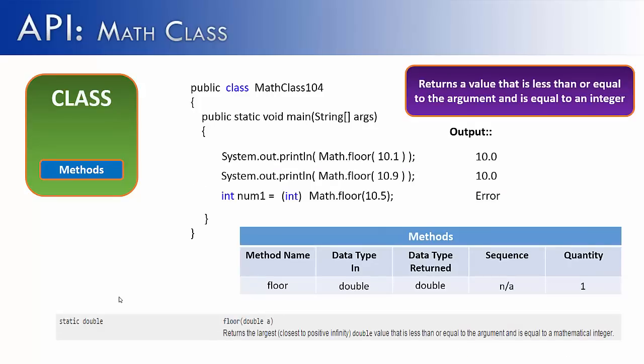Another method that I wanted to show you is floor, and the floor method rounds down. Well, usually when you're thinking of rounding, you think it returns a whole number. But how can I know that it doesn't return a whole number? All I need to do is look at the API, and I can see that the data type returned is a double. And so that's why I get 10.0 and not just 10.